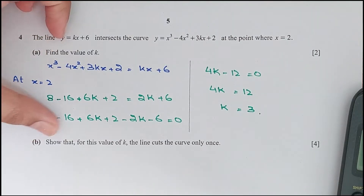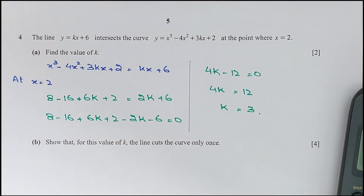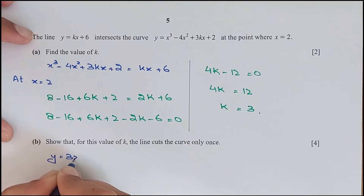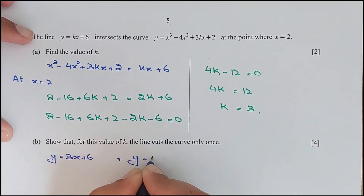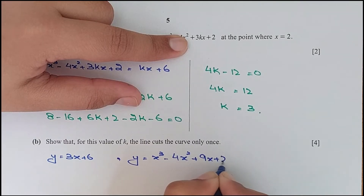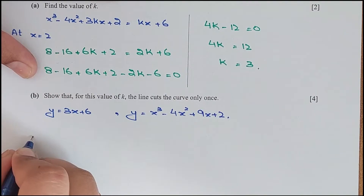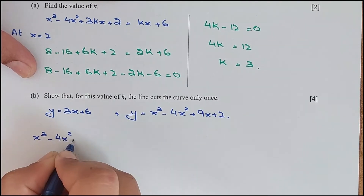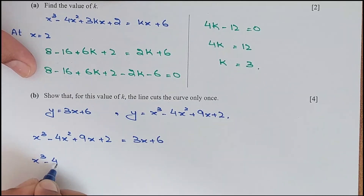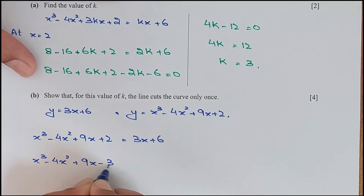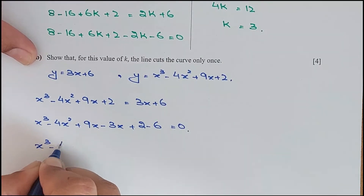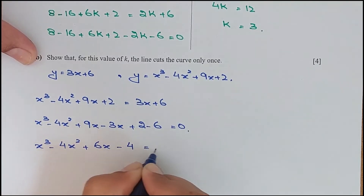For part b, show that for k equals 3, the line cuts the curve only once. With k equals 3: the line is y equals 3x plus 6 and the curve is y equals x cubed minus 4x squared plus 9x plus 2. Setting equal: x cubed minus 4x squared plus 9x plus 2 equals 3x plus 6, giving x cubed minus 4x squared plus 6x minus 4 equals 0.